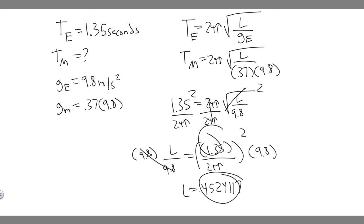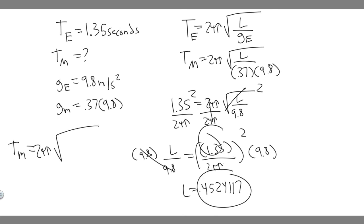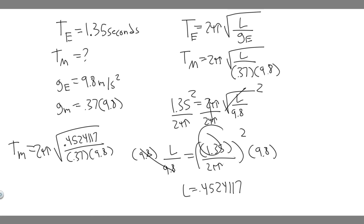We'll use this value when we plug it in, because the length is all we need to solve for the period on Mars. So T on Mars equals 2π multiplied by the square root of 0.4524117 divided by (0.37 times 9.8). Go ahead and plug this into your calculator: 2 times π times the square root of 0.4524117 divided by 0.37 multiplied by 9.8.